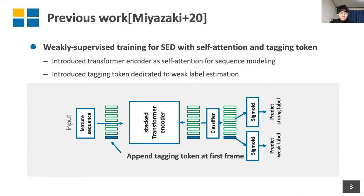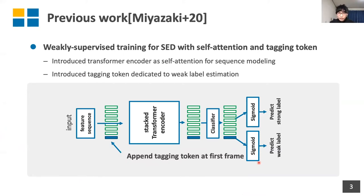First, we introduced a Transformer Encoder with self-attention for sequence modeling. In addition, we introduced a tagging token dedicated to weak label estimation. The overview of our previous work is as follows: the input feature sequence is fed into a stacked Transformer Encoder. At that time, a tagging token is appended at the first frame. Then the tagging token is used to predict the weak label, and the other frames are used to predict the strong label.